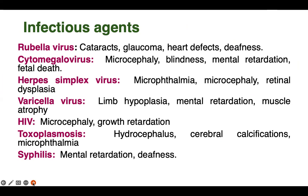Retinal dysplasia means cell-related or tissue-related abnormalities can be seen in the retina, the eye's structure. If varicella virus is present in the body during pregnancy, it can cause limb hypoplasia — meaning a specific limb remains underdeveloped — mental retardation, and muscular atrophy from childhood, which prevents proper locomotor development.